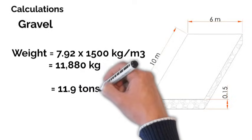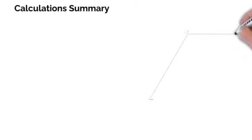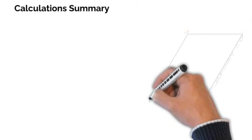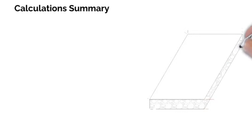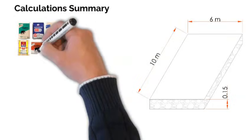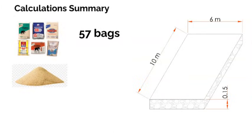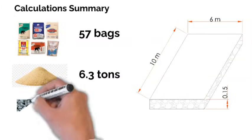In summary, in order for us to cast a 10m × 6m × 0.15m thick slab using a mix ratio of 1:2:4, we will require 57 bags of cement, 6.3 tons of sharp sand, and 11.9 tons of gravel.